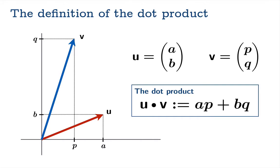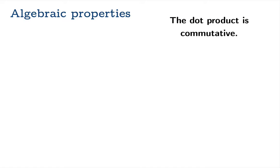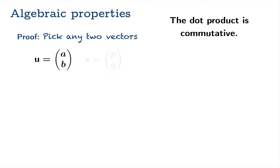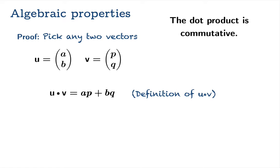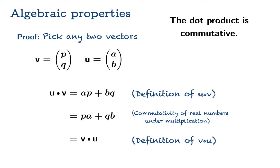You should know the definition of the dot product. If you express u and v in components, then u dot v is simply the sum of the product of like components. You've probably already seen a proof that the dot product is commutative. You'd pick any two vectors, express them in component form, apply the definition of u dot v to get this quantity, but the usual properties of real numbers under multiplication tell you that you can commute the order of operations there. So ap plus bq is equal to pa plus qb, and now you recognize that this is what you get if you took v dot u according to your definition.